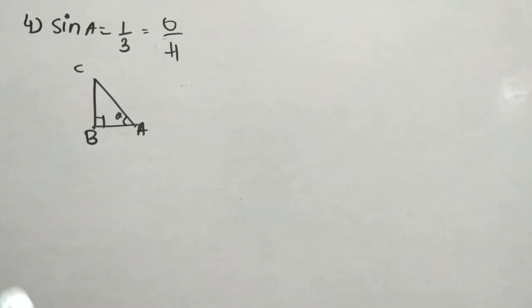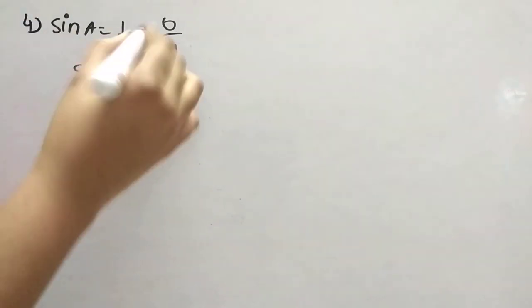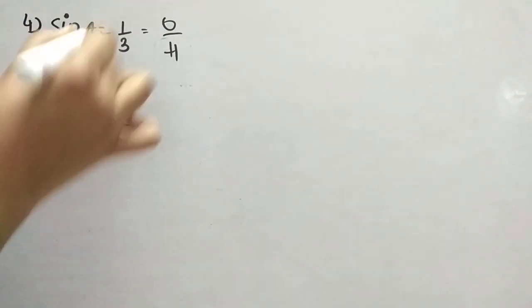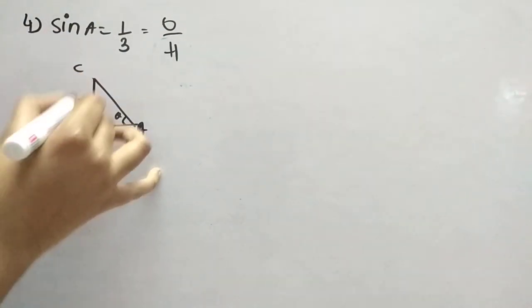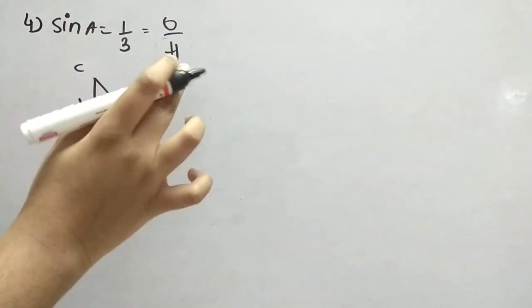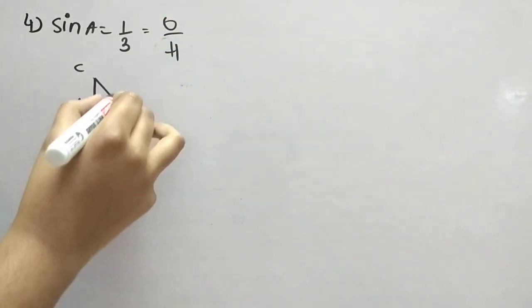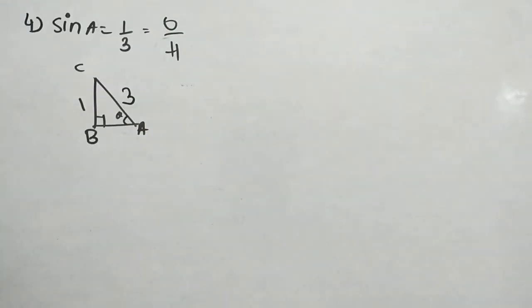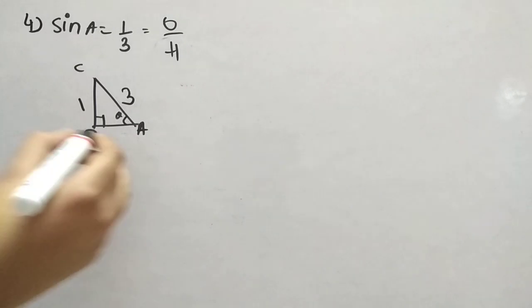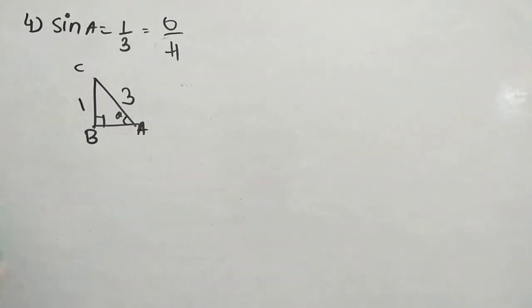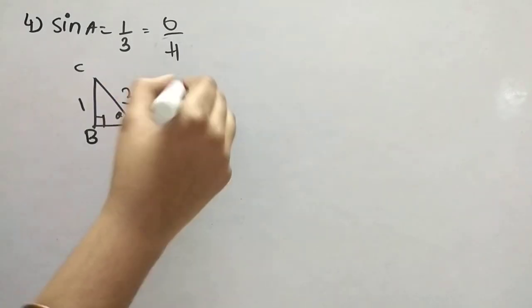But, little bit answer change will come. Answers will be same only, but while solving, it will be different. Now, opposite is here, right? So, it is 1. But, if you are putting theta here, it will be different again. I am saying now only. And, H is this. H ever written doesn't change. These two only will change. Now, we have to find adjacent. Because, everything we have to find in the sense, we need adjacent also. So, let's find it.